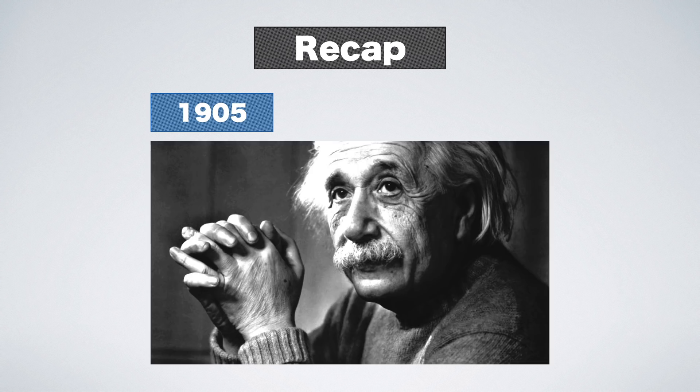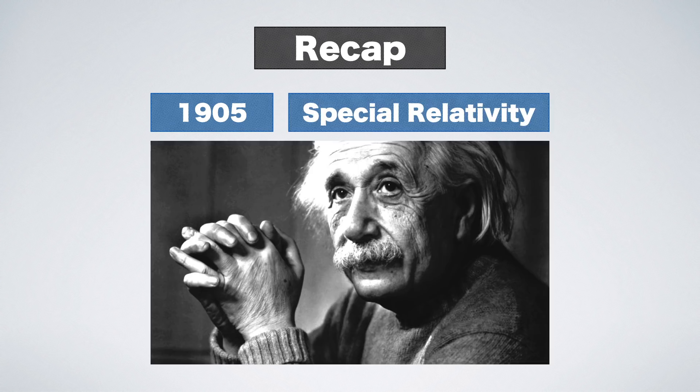Quick recap. By 1905, Einstein had published a theory which we now refer to as special relativity. It comprises three naturally occurring phenomena.